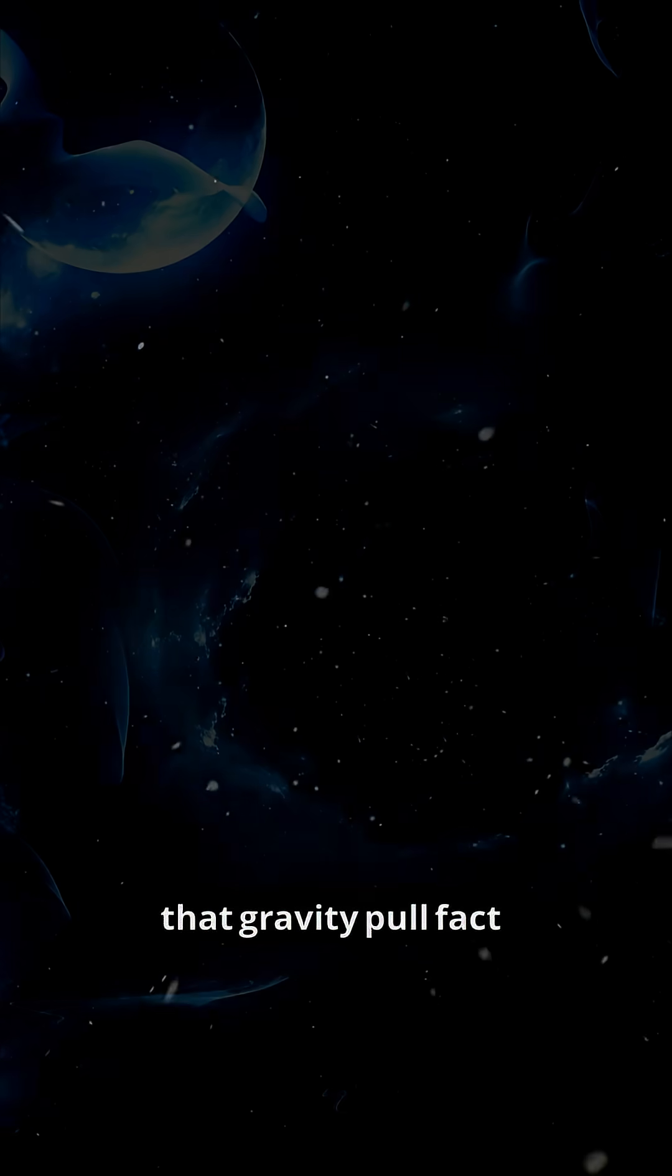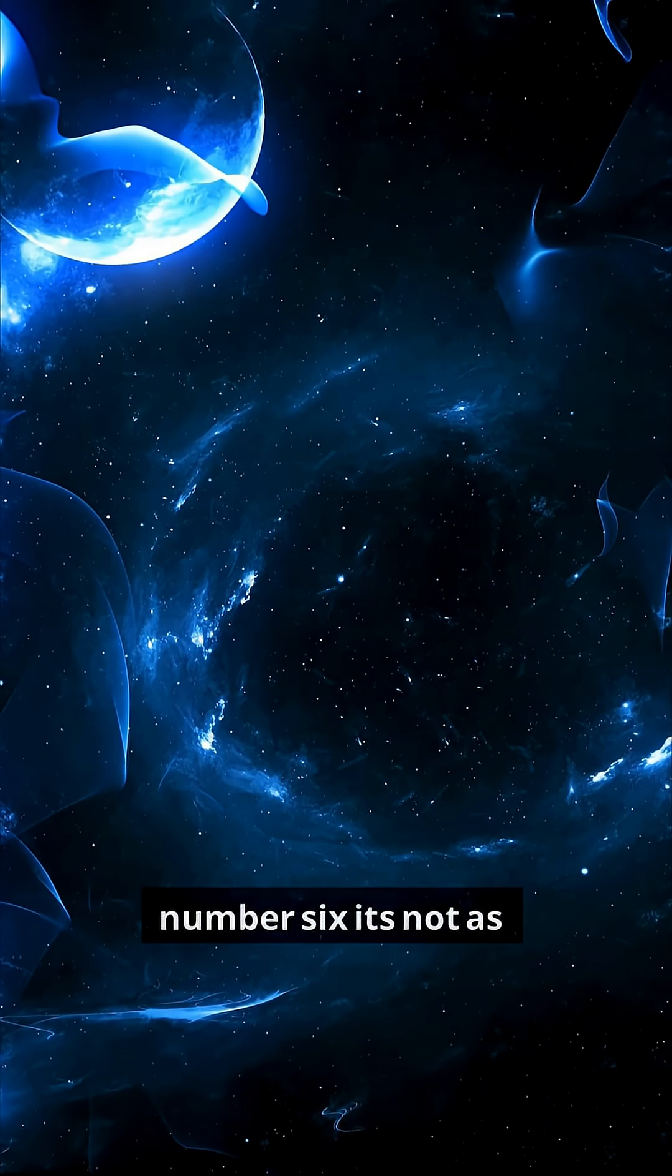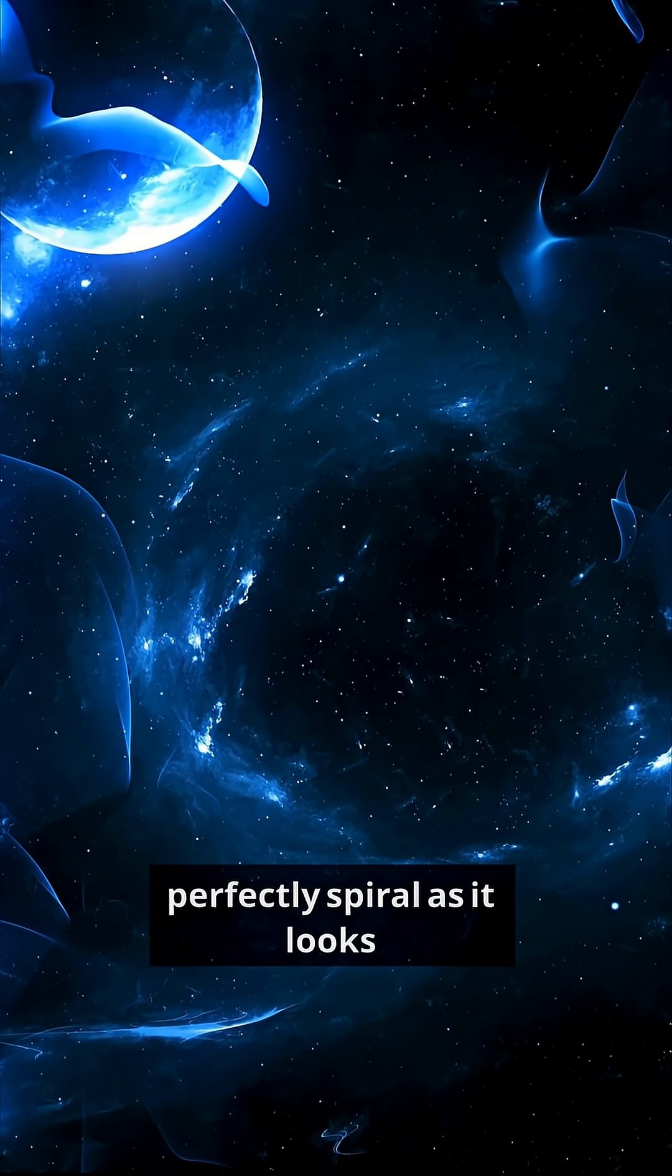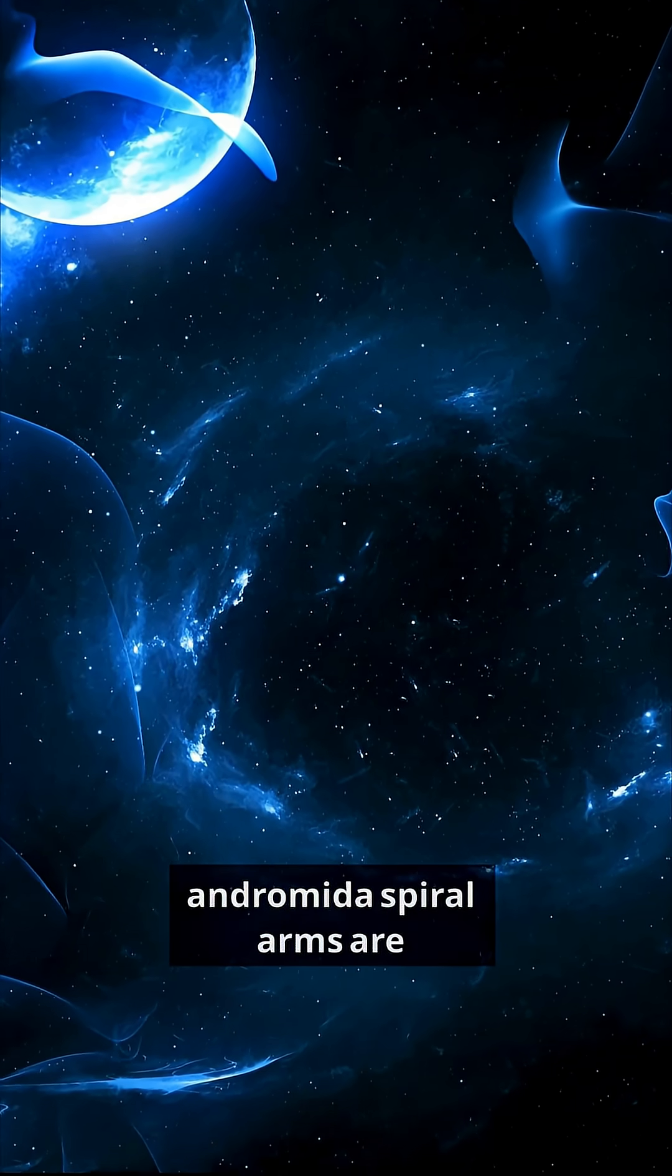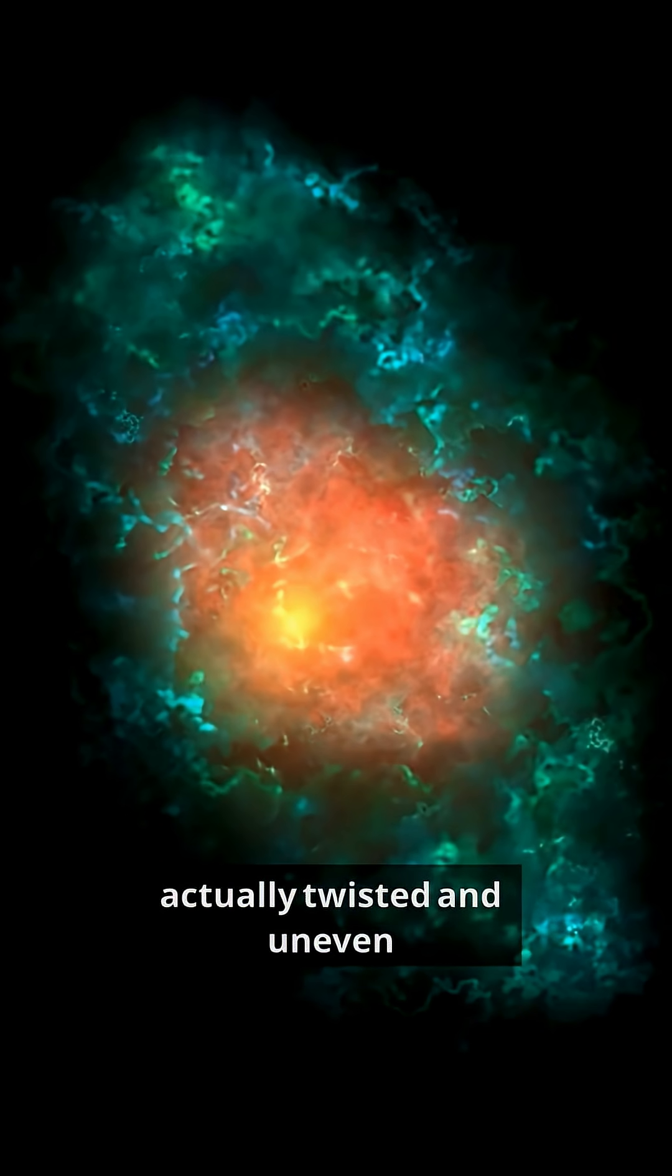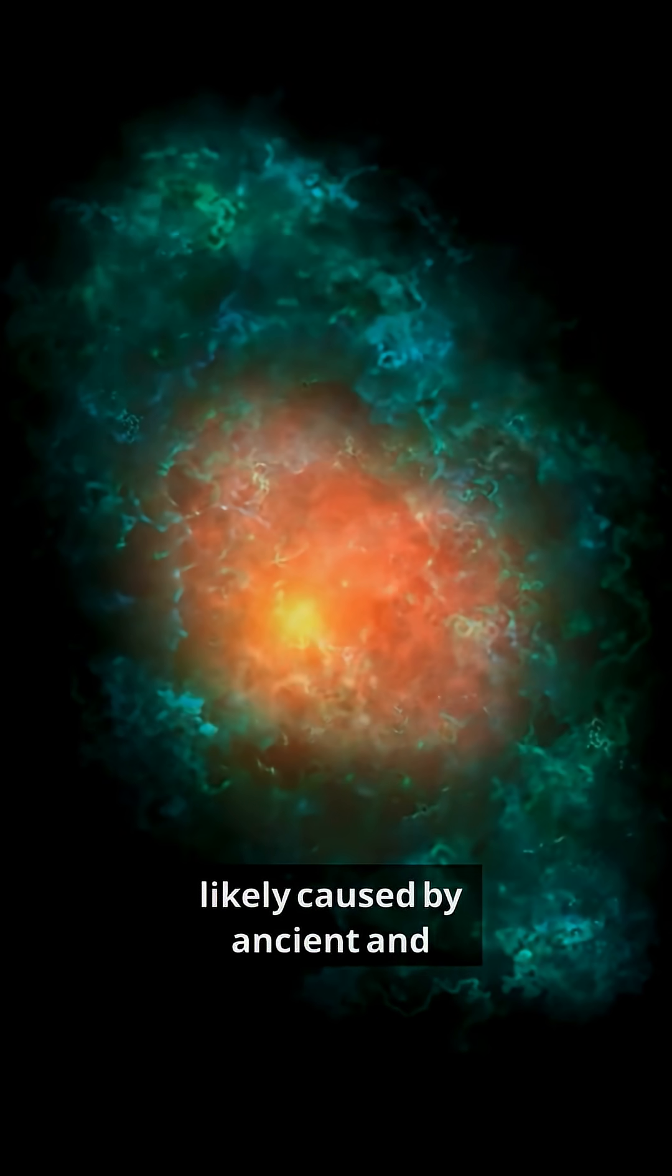Imagine that gravity pull. Fact number six, it's not as perfectly spiral as it looks. Although it appears beautifully symmetric in photos, Andromeda's spiral arms are actually twisted and uneven, likely caused by ancient galactic collisions.